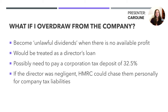So what if you overdraw from the company? These become unlawful dividends when there's no available profit — your company legitimately had no available money, as it needed all the money for its own liabilities or simply had a loss. When you're also the director, these unlawful dividends would be converted into a director's loan. If the director's loan isn't repaid by the corporation tax deadline, HMRC would request a corporation tax deposit of 32.5% on the loan value — essentially taking this as higher-rate dividend tax. You can get this back later, but there is a deadline to repay the loan and reclaim the money from HMRC. If you don't pay back in time, HMRC will simply keep the money.